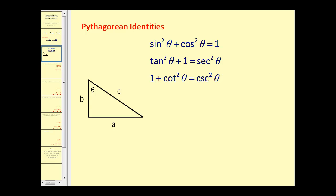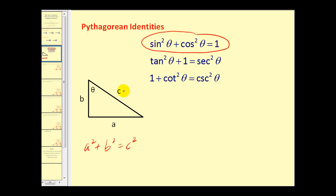Let's take a closer look at this first Pythagorean identity. Let's look at this right triangle. One of the first formulas we learn about right triangles is the Pythagorean theorem, which states that a squared plus b squared is equal to c squared, where c is the hypotenuse and a and b are the two legs. We're going to use this right triangle to verify the identity sine squared theta plus cosine squared theta equals one.